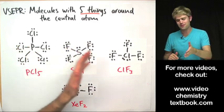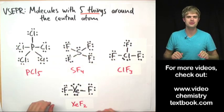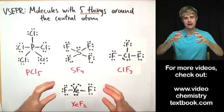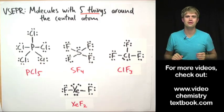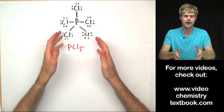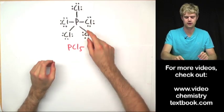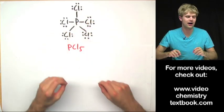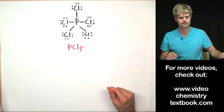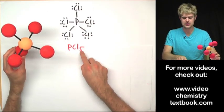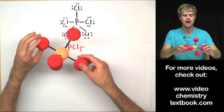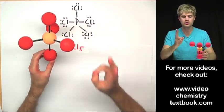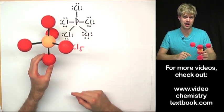We've got a whole bunch of Lewis structures of these various molecules. Let's look at what these molecules would look like in three dimensions in real life. We're going to start out with a molecule that has a central atom surrounded by five other atoms. Here's what a molecule like PCl5 would look like in three dimensions — this is the shape that it would have.